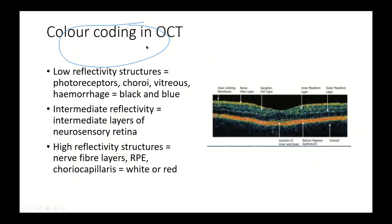Regarding color coding in OCT: anything appearing red or white shows hyper-reflectivity, such as the nerve fiber layers, RPE, or choriocapillaries. Low-reflective structures appear dark — like the vitreous cavity, hemorrhage, or blood. Intermediate reflectivity is represented by the intermediate layers of the neurosensory retina, such as the outer or inner plexiform layers.